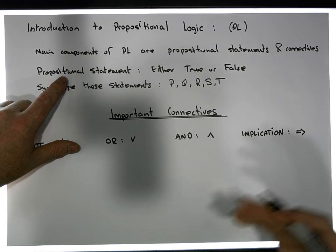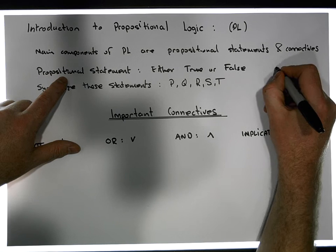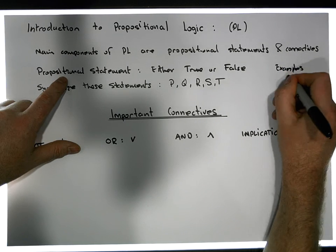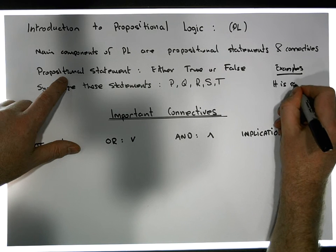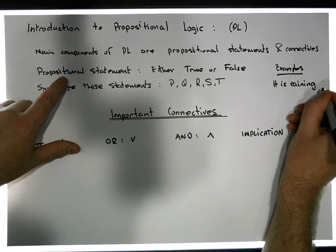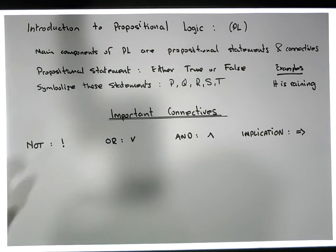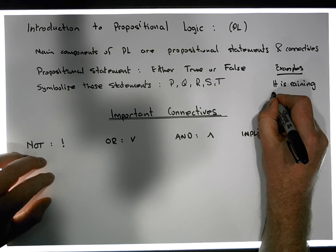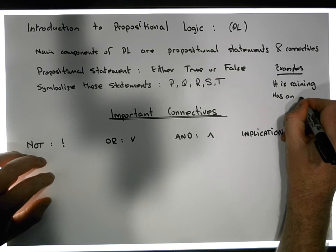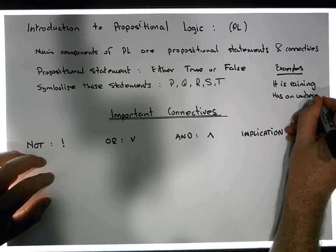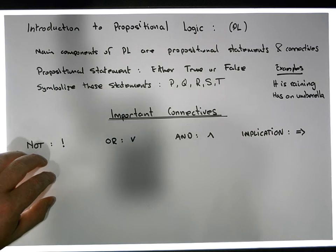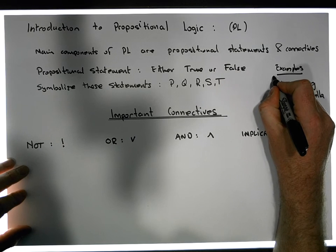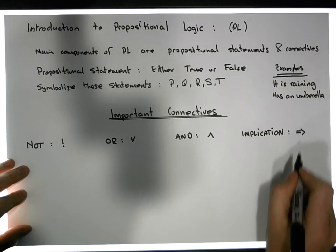For example, some simple examples: 'it is raining' — if you look outside the door now, that statement is either true or false, it is raining or it's not raining. 'Has an umbrella' — if you look at that person or yourself, have you got an umbrella, that's either true or false. So there are statements in our language that are either true or false.